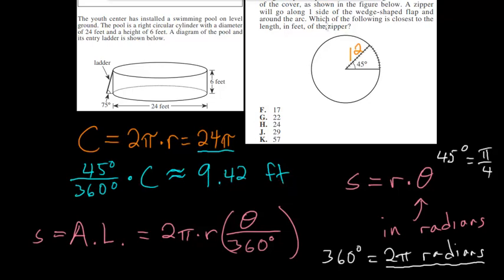So now to answer the question, which of the following is closest to the length in feet of the zipper, we just have to add this 12 feet to this arc length that we just found. Since we know the arc length is about 9.42 feet, and adding 12 to 9.42 you get 21.42, which is closest to letter G.